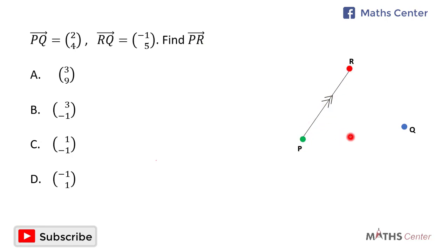As we can see from the diagram, moving from P to R will be equal to moving from P to Q and then moving from Q to R.